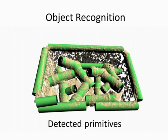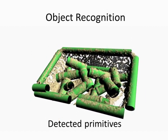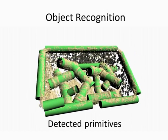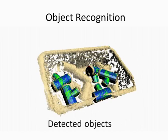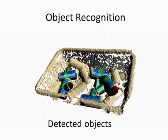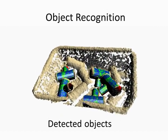Our approach detects shape primitives. Objects are compounds of primitives found by graph matching.